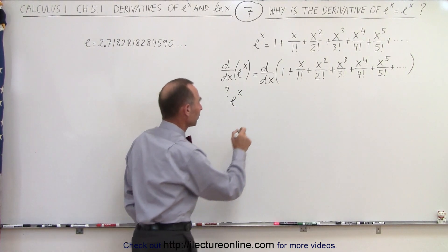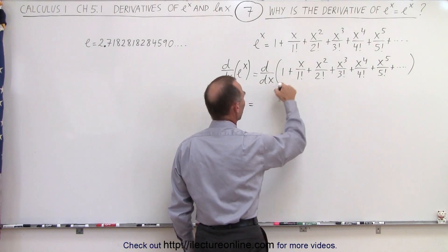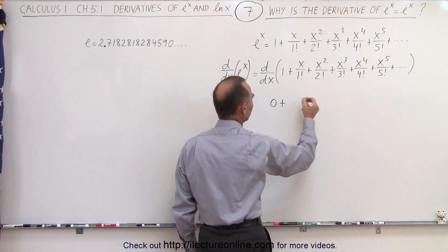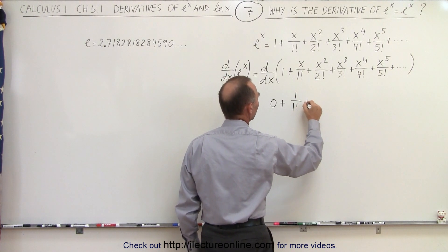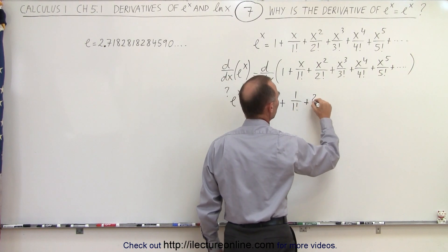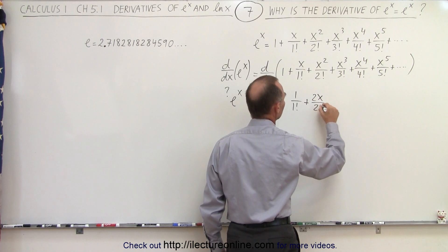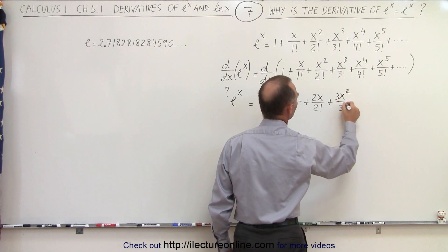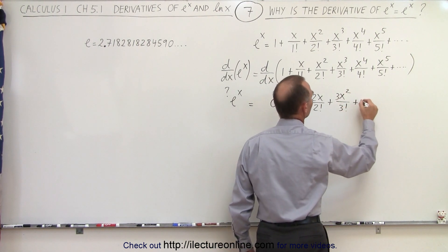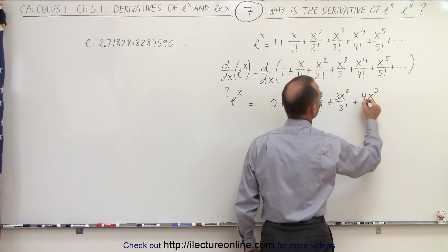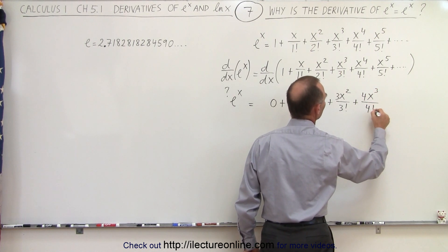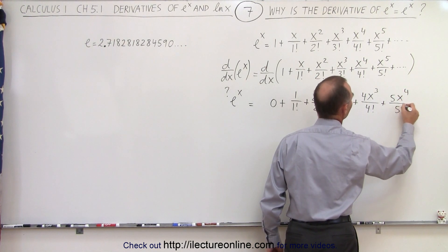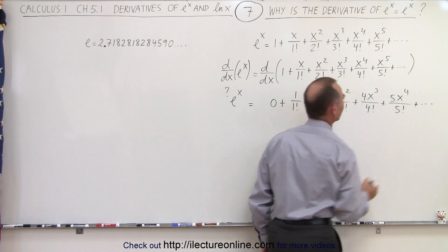So we're going to take the derivative of the right side. The derivative of 1 equals 0, plus the derivative of x is 1, so we get 1 divided by 1 factorial, plus the derivative would be 2x in the numerator divided by 2 factorial, plus 3x squared over 3 factorial, plus 4x cubed divided by 4 factorial, plus 5x to the 4th divided by 5 factorial, and you can see the pattern.